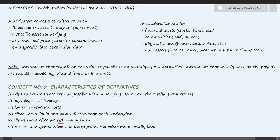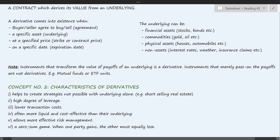Derivatives also allow effective risk management, which basically means reducing risk exposure to a desired level — it does not necessarily mean eliminating the risk entirely. Using derivatives, we transfer risk from those who want to get rid of it to those who want to accept it — hedgers who do not like risk transfer it to speculators who are risk-loving. Lastly, a derivative is a zero-sum game: there is no creation of capital, merely a transfer of wealth from one party to another. If someone is gaining, the other must be losing.